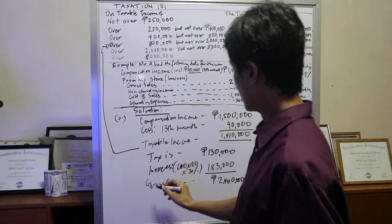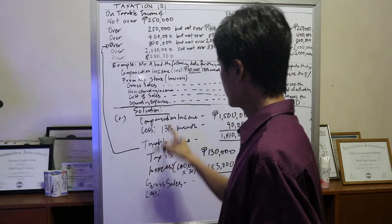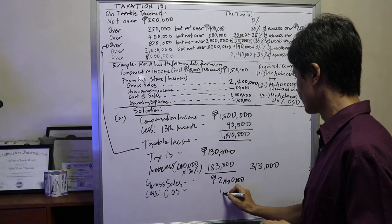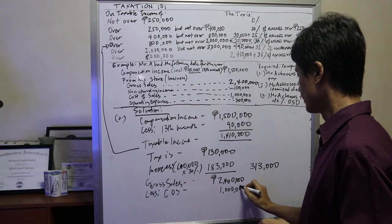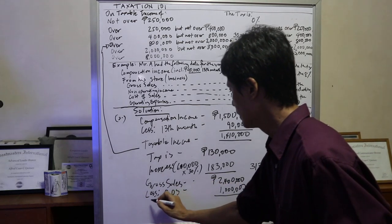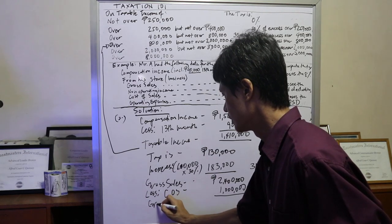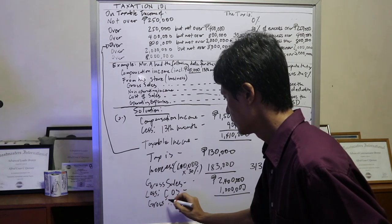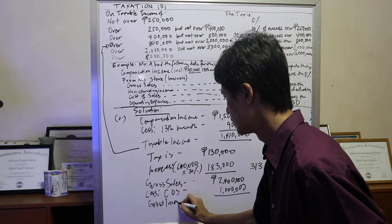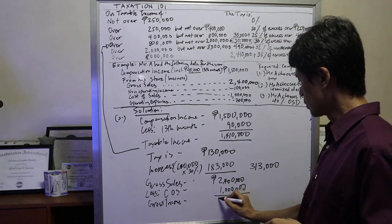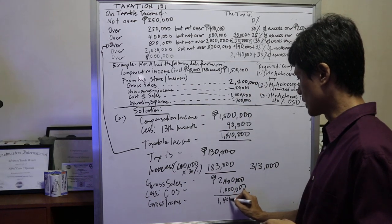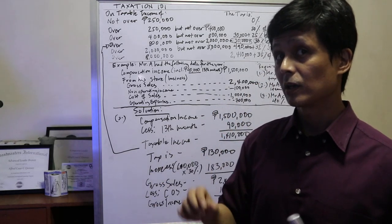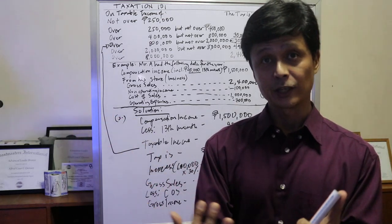So going there, less cost of sales. Cost of sales is 1 million. So you get the gross profit or gross income, which is 1,400,000. Now, after getting the gross income, ililis mo pa dito yung periodic expense. Meaning to say, ito yung mga operating expenses.